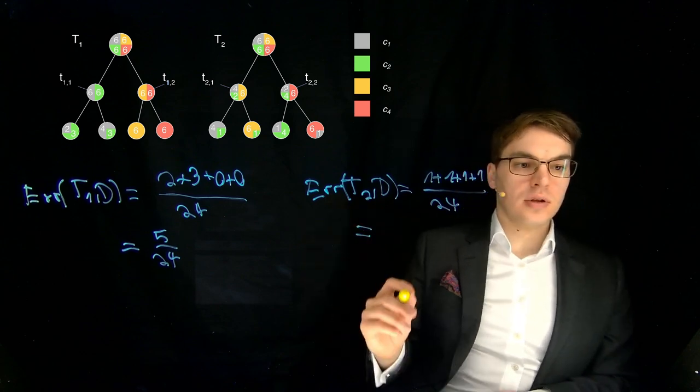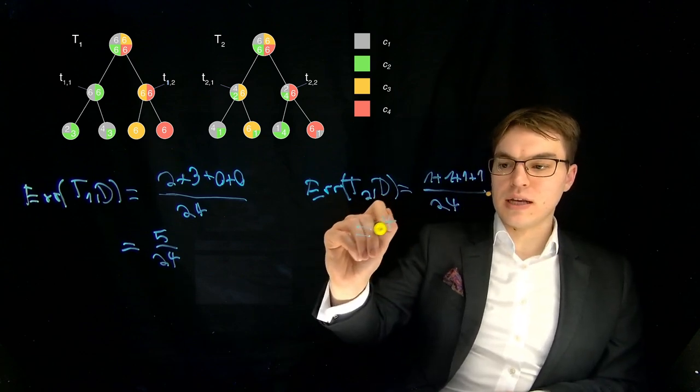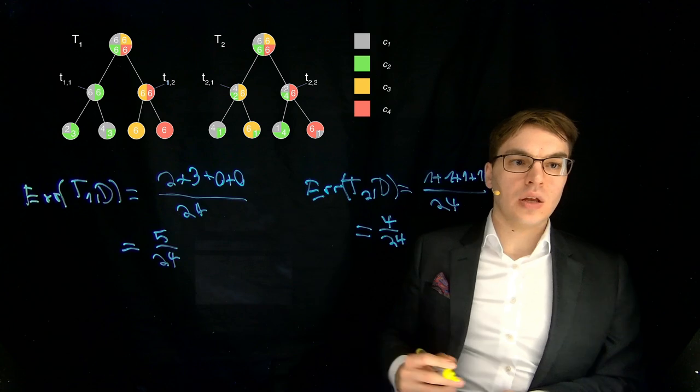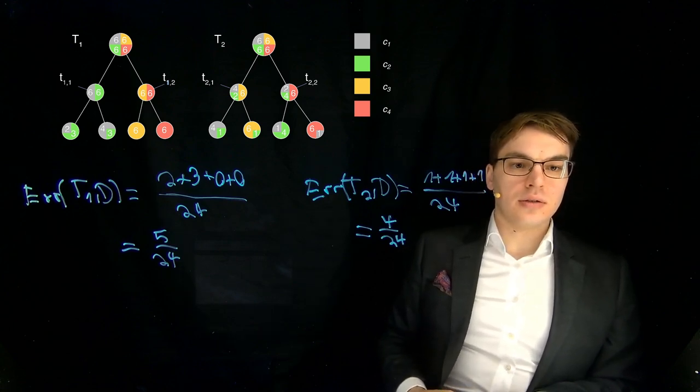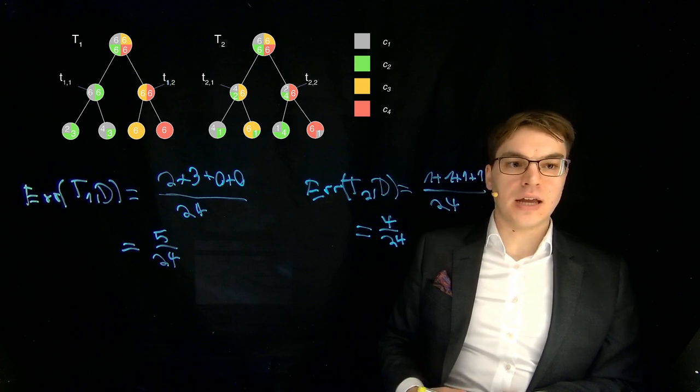So here we have four divided by 24. So it's a bit lower. So in the end the tree T2 has a lower misclassification rate.